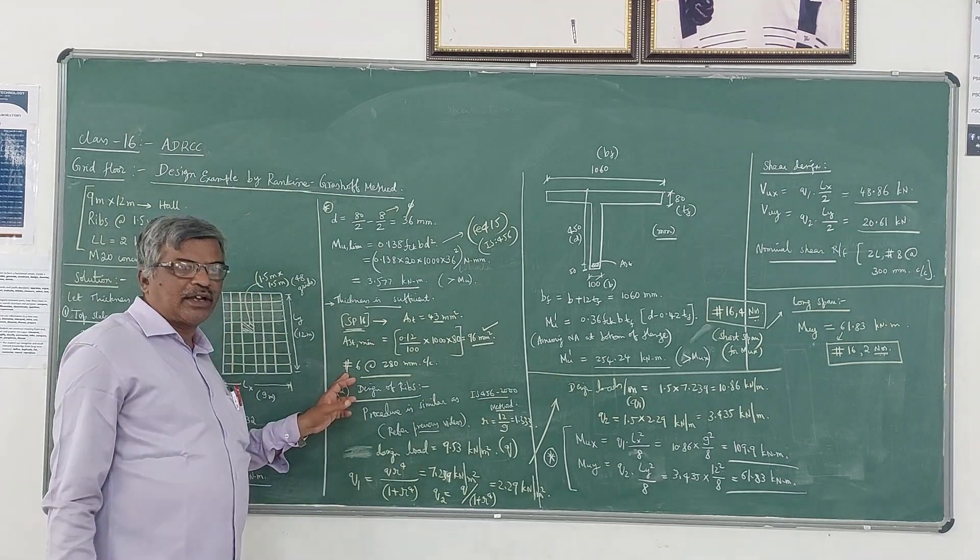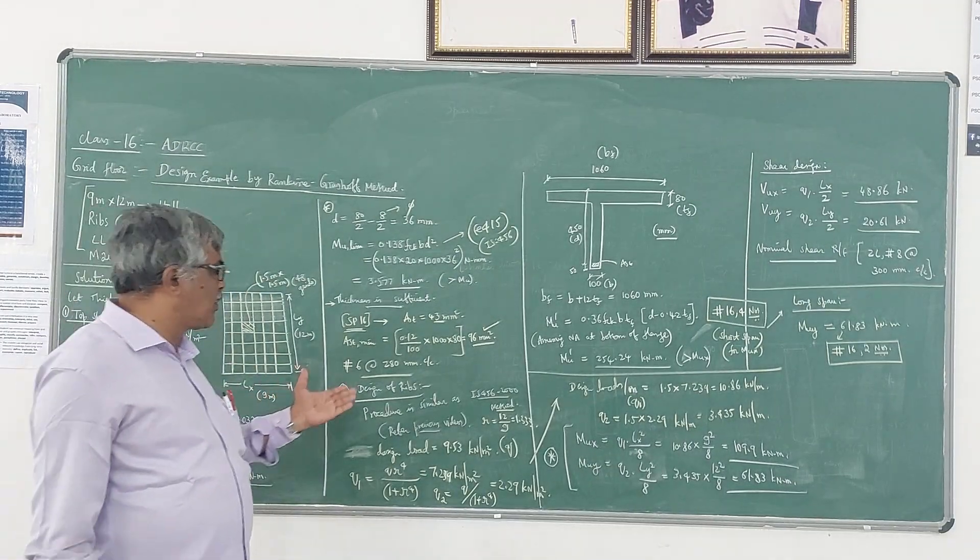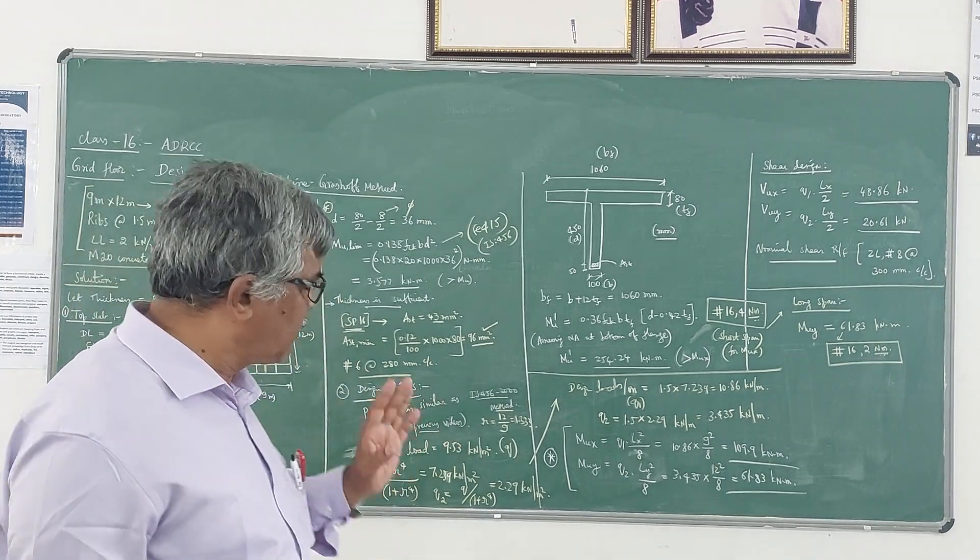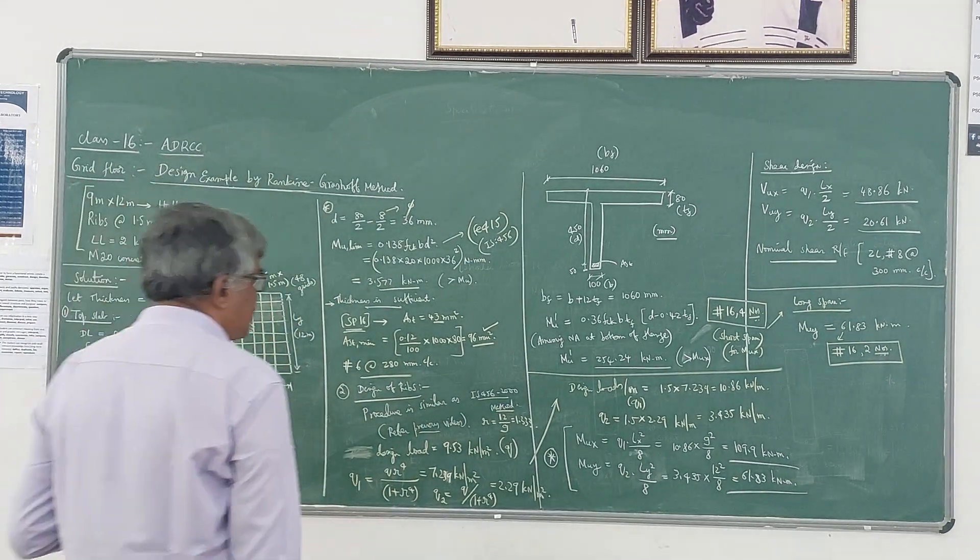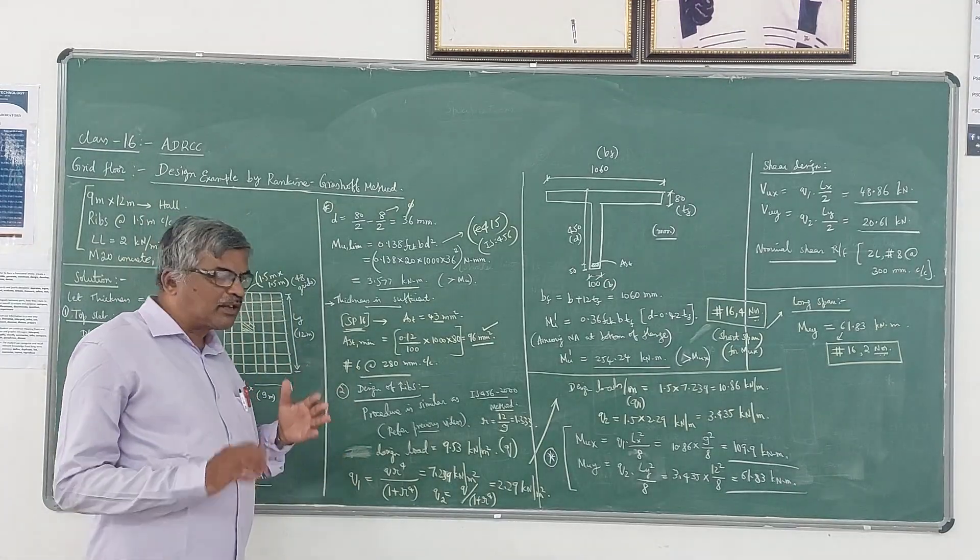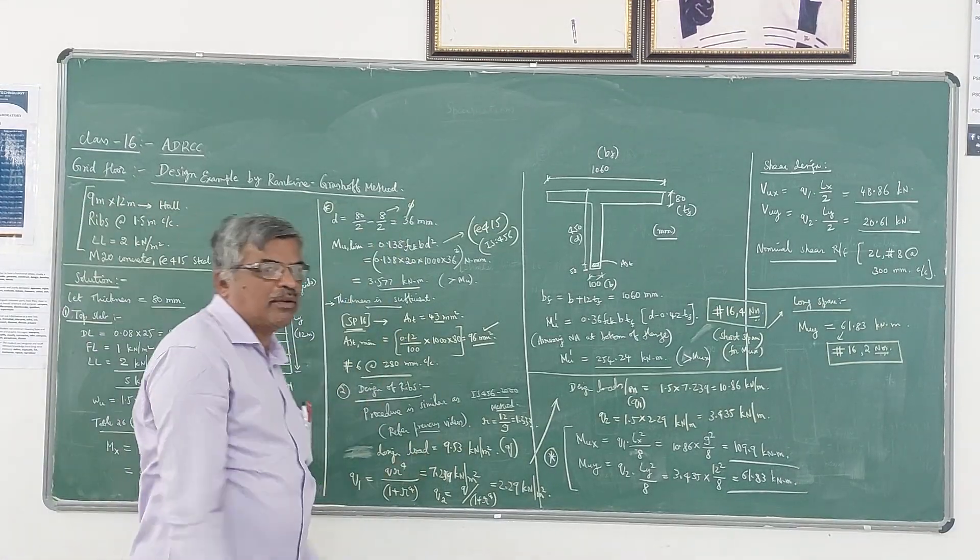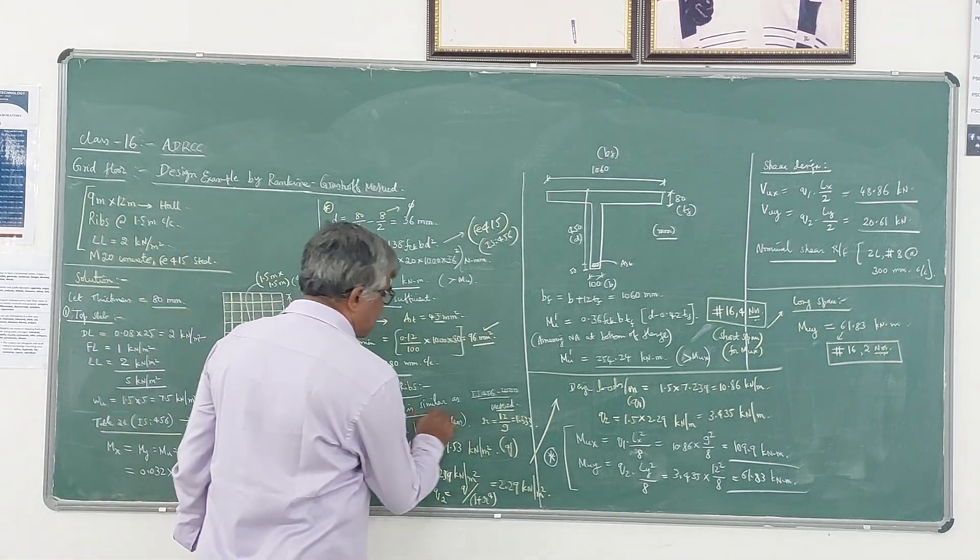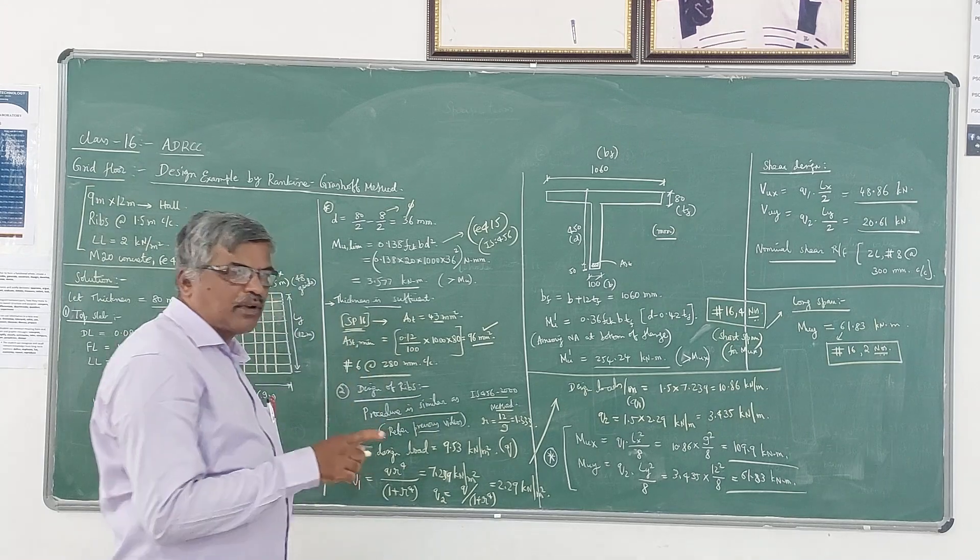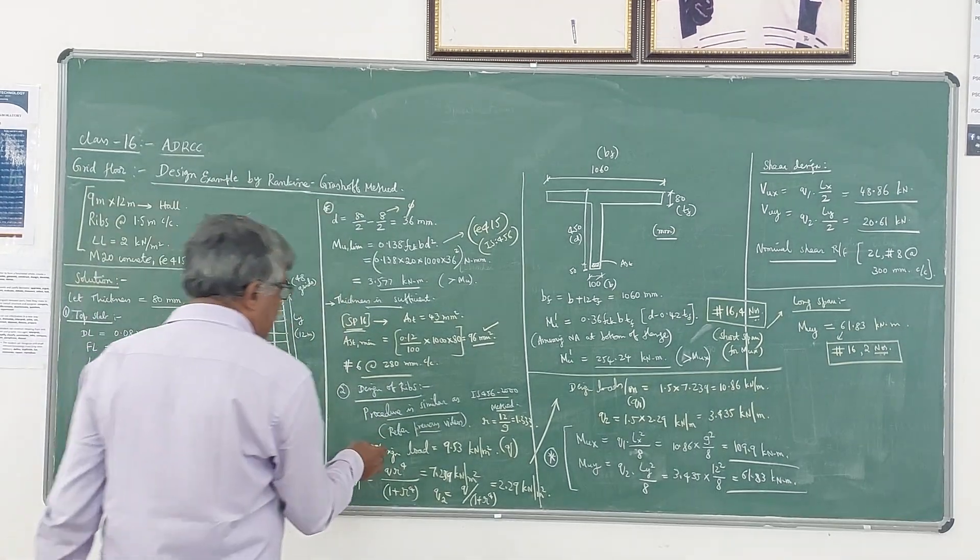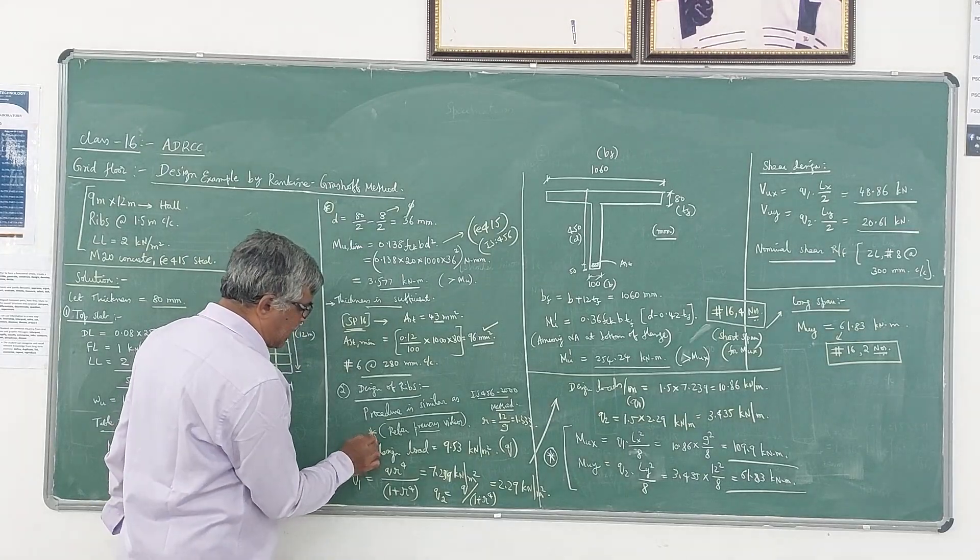Now the second part is the design of the rib portion, that is like a T-beam we have to design. This procedure is similar to IS456 method which I have explained in detail in the earlier video. Please refer to the earlier video.